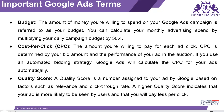Budget: the entire amount you have for your ad is known as budget. Cost per click (CPC): the amount that you will pay for a particular click. Quality score: the number that is assigned by Google to your ad, and on that basis CPC is decided.